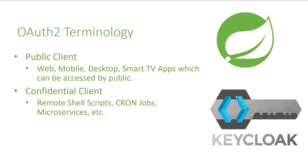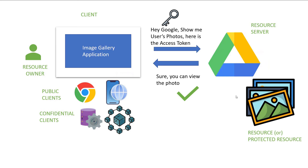We also have a couple of categories in clients. A client can be a public client, which means a mobile application or a web or desktop application. The other category is a confidential client, which can be a microservice or a cron job running on a remote server. For each client, we have different kinds of authorization flows, also called grant types, which means for different kinds of clients we have different mechanisms to get the access tokens. We will discuss this in detail in the coming sections.